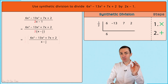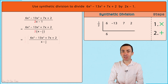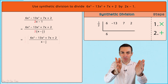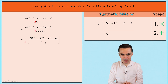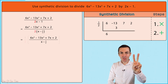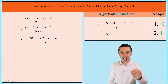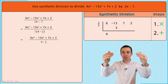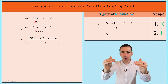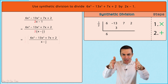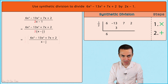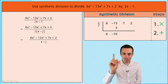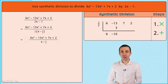We now follow the two simple steps of synthetic division: multiply and add. Step one — multiply: we take the one-half and multiply by the 6 to give us 3, which we write one column to the right below negative 13. Step two — add: we take negative 13 and add 3 to give us negative 10, which we write below the synthetic division symbol.